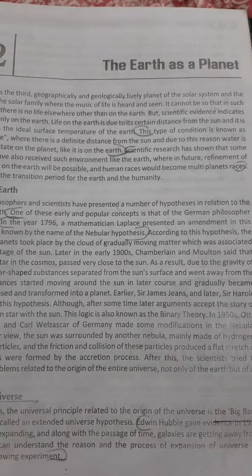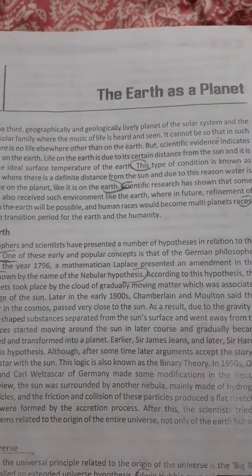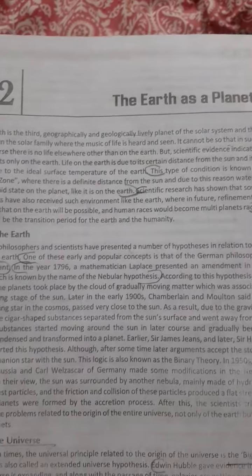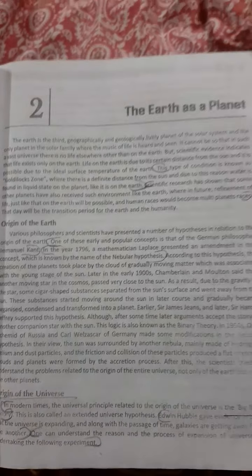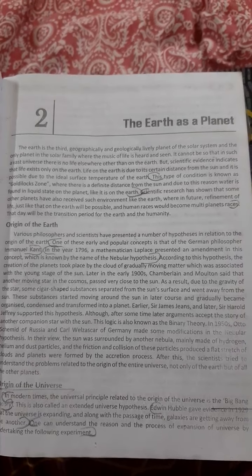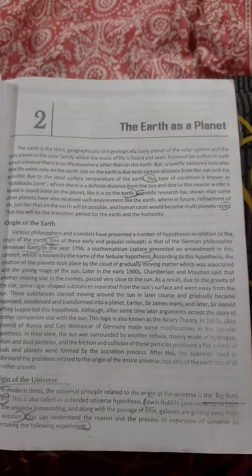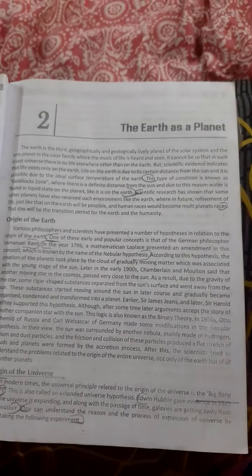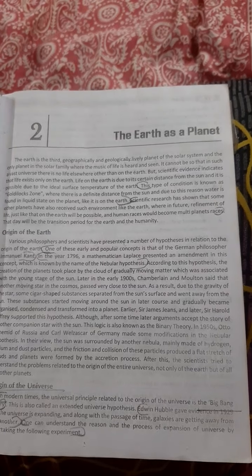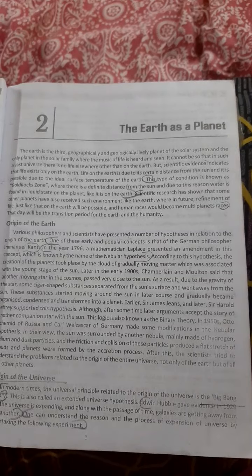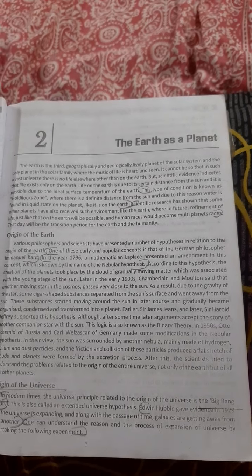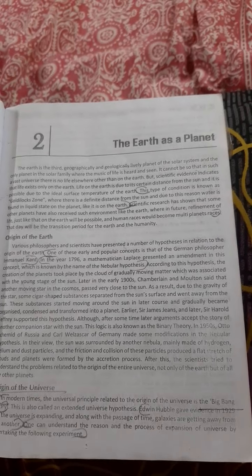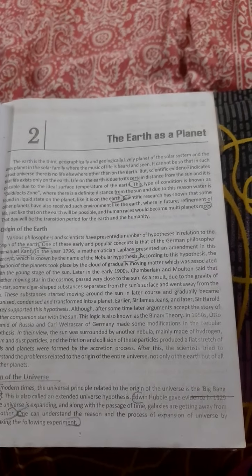The Earth is the third geologically and geographically living planet of the solar system where humans live. It cannot be so that in such a vast universe there is no life somewhere other than Earth, but scientific evidence indicates that life exists only on Earth. Life on Earth is due to its certain distance from the Sun and is possible due to the ideal surface temperature of the Earth. This type of condition is known as the Goldilocks zone, where there is a definite distance from the Sun, and due to this reason water is found in the liquid state on the planet like it is on Earth.